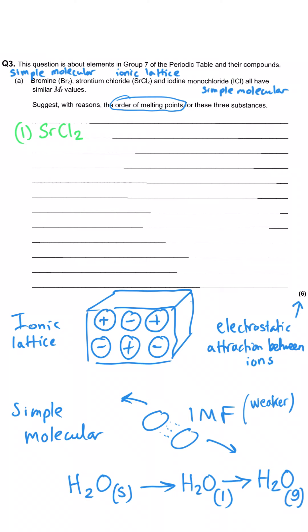To decide between bromine and ICl we need to consider different types of intermolecular force. Br₂ cannot have hydrogen bonding, nor can ICl since neither has an electron-deficient hydrogen. Moving to permanent dipole-dipole: this would not exist in bromine because both atoms are the same element with identical electronegativity, so the only force in bromine is van der Waals. Whereas in iodine monochloride, iodine and chlorine have different electronegativities, giving a permanent dipole and therefore permanent dipole-dipole forces between ICl molecules.